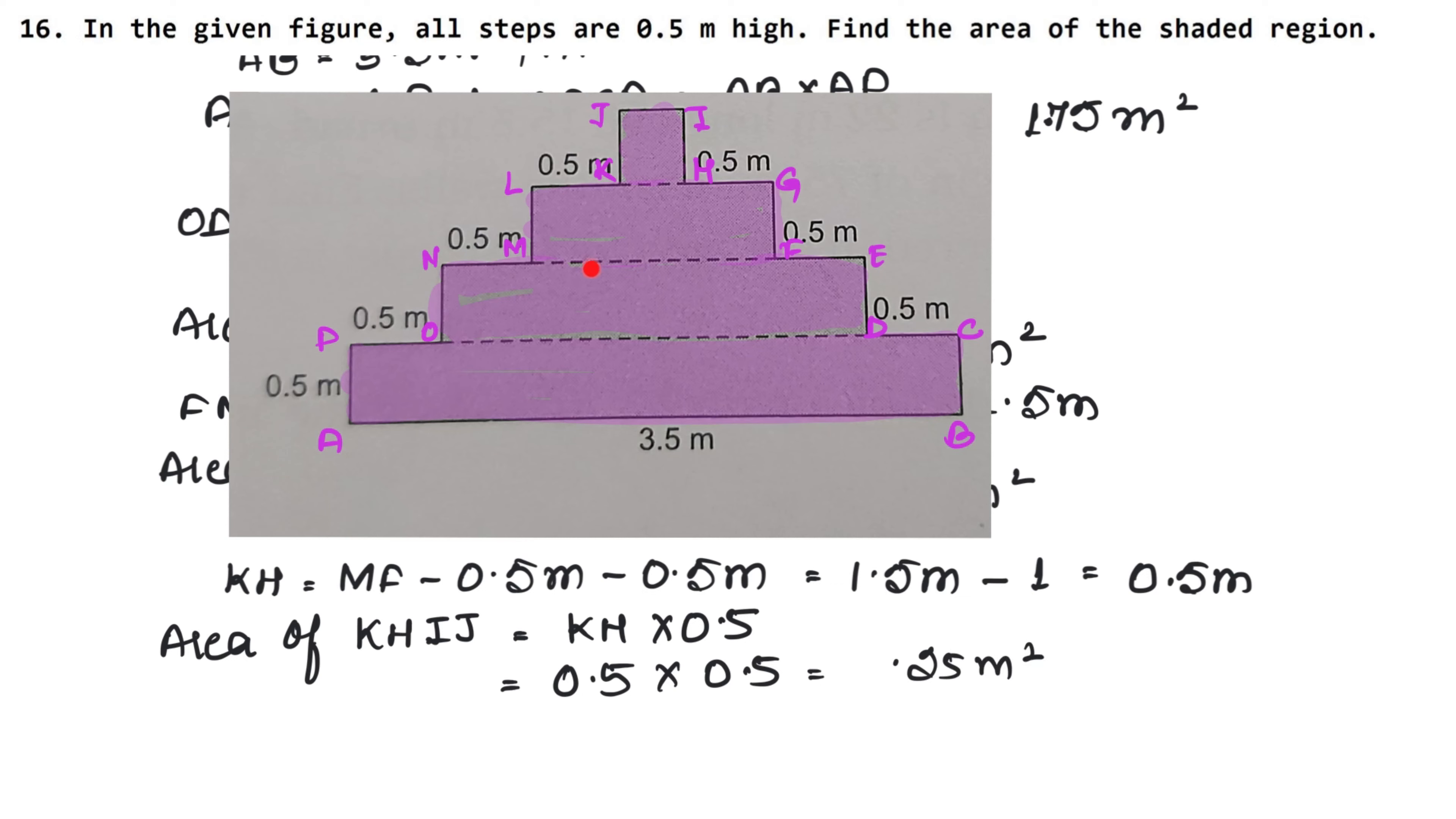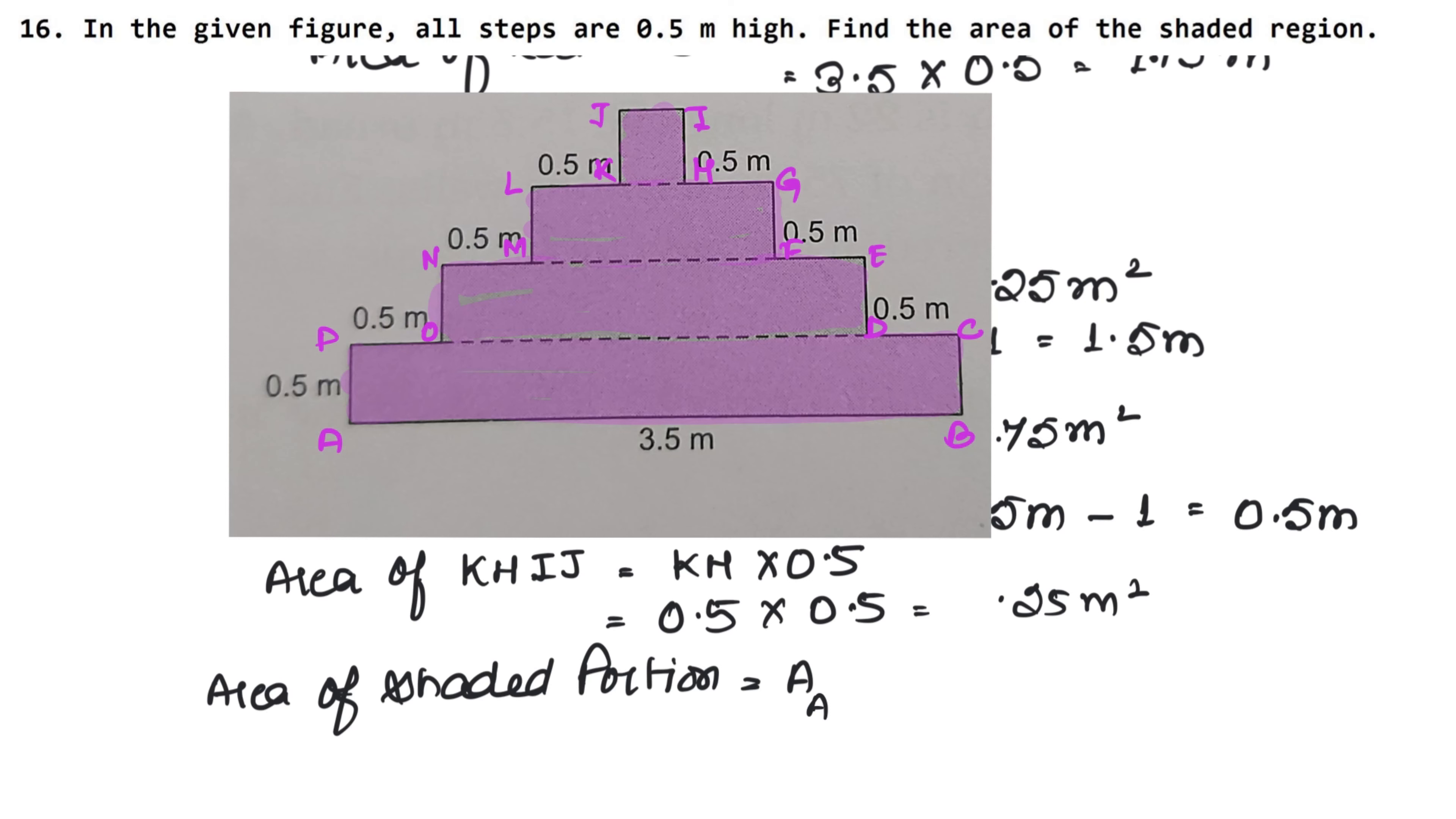Now, what do we need to do? This shaded portion of the area. Area of shaded portion. ABCP plus area of ODEN plus area of MFGL plus area of KHIJ.